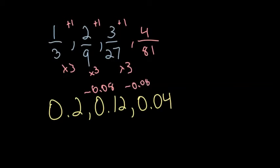So if we minus eight-hundredths, we'll get our next term. So four-hundredths minus eight-hundredths is going to give us negative four-hundredths.